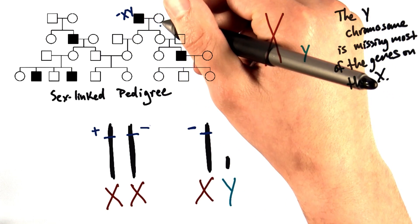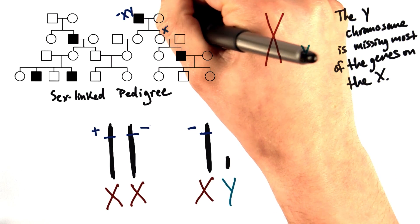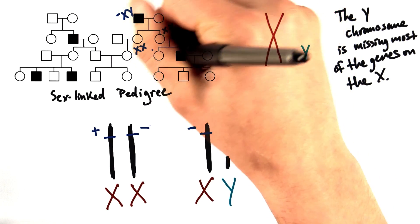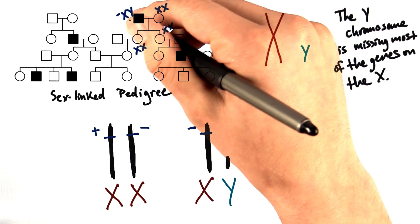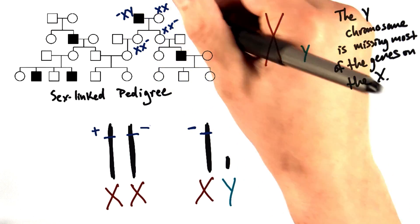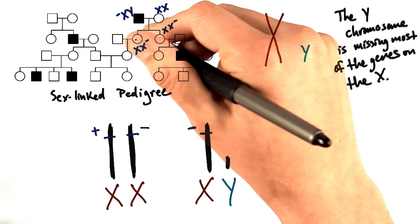Because both daughters are XX. They get one X from mama, one X from dad. And the X that came from dad had to have been the one with the recessive allele. So both of these daughters are carriers. They have to be because we know they're unaffected.